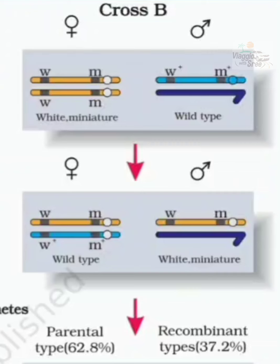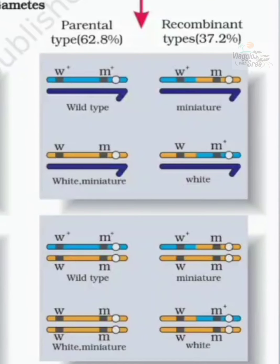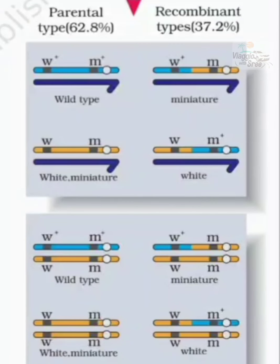If you cross the F2 individuals by genotype or phenotype, then F2 will yield a parental type of young ones and a recombinant type of young ones. Comparing Cross A, the F2 will show a recombinant type of young ones.